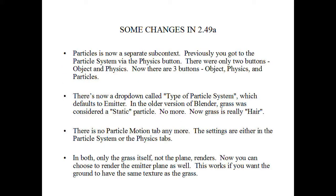Now some changes in 2.49A. The particles system is now a separate subcontext. Previously you got to the particle system via the physics button, and there were only two buttons: object and physics. Now there are three buttons: object, physics, and particles. There's now a dropdown called type of particle system, which defaults to emitter. In the older system, grass was considered a static particle — no more. Now grass is really hair, as well as fur, and hair is everything. So there's no particle motion tab anymore; the settings are either in the particle system or the physics tabs. Only the grass itself renders, not the plane. However, there's a new button called emitter, which lets you render the emitter plane as well — useful if you want the ground to have the same texture and color as the grass.